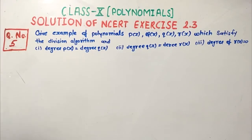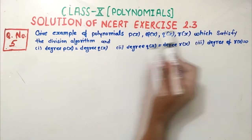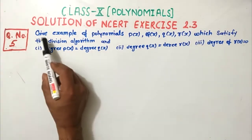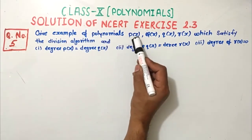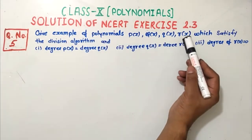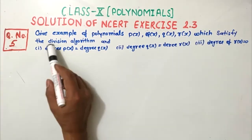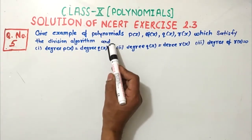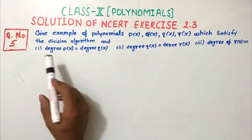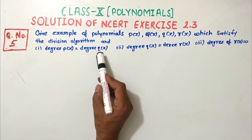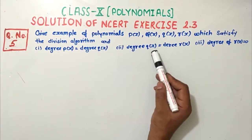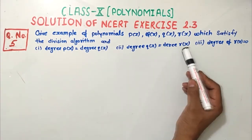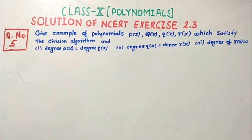Hello friends, I am Dinesh with another question from Exercise 2.3, Question Number 5. The question is: give examples of polynomials p(x), g(x), q(x), r(x) which satisfy the division algorithm, under three conditions: (1) degree of p(x) equals degree of q(x), (2) degree of q(x) equals degree of r(x), (3) degree of r(x) equals 0.